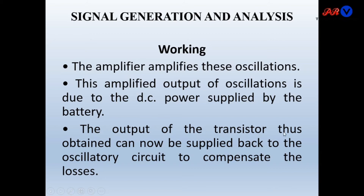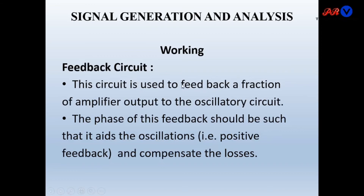The amplified output is supplied back to the oscillatory circuit through a feedback path to compensate for losses. The feedback circuit feeds a fraction of the amplifier output back to the oscillatory circuit. The phase of this feedback must be such that it adds to the oscillations — that is, positive feedback — with a phase of 0, 360, or an integral multiple of 360 degrees.